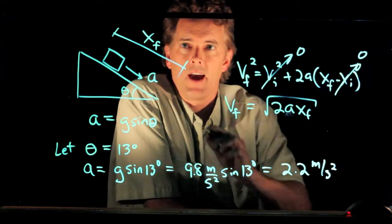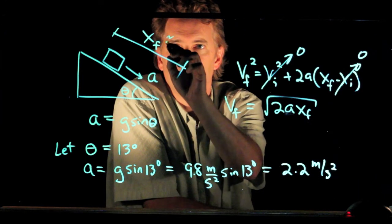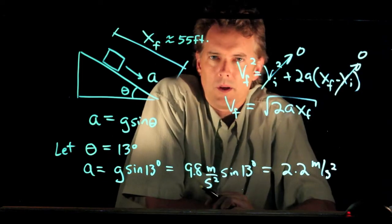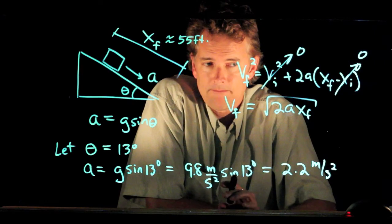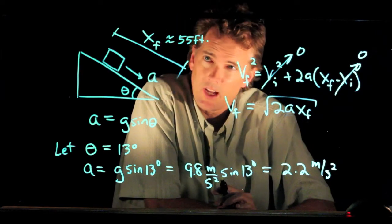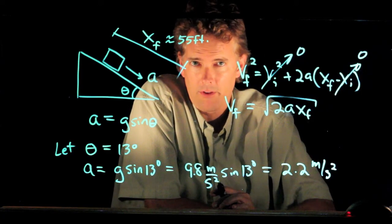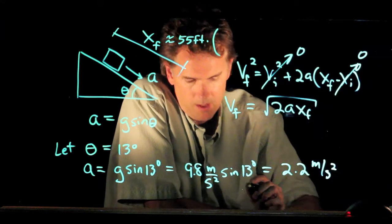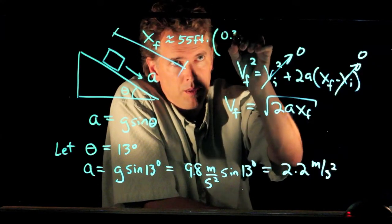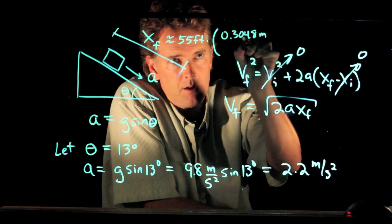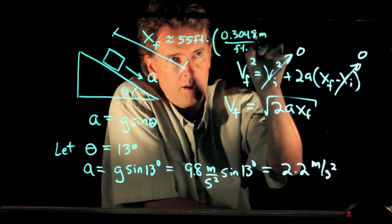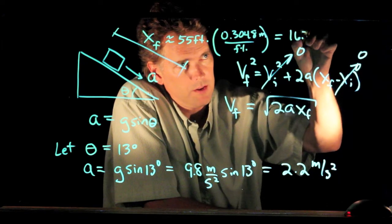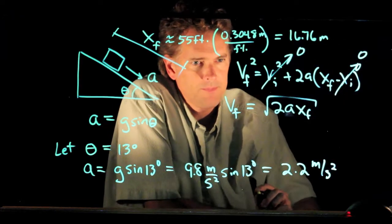And now if xf is some distance, say 55 feet, then we can plug in all those numbers, except feet is not really SI units. And so we have to convert that to meters. And the conversion factor is 0.3048 meters per foot. And if you do that, you get 16.76 meters.